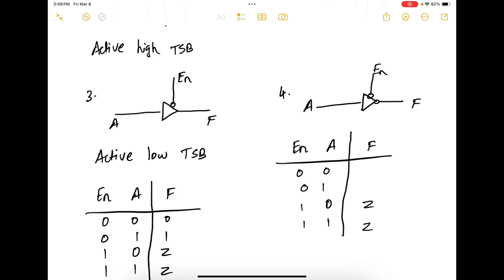So in this case, since enable is 0 and A is 0, your F is 1. And since enable is 0 and A is 1, your F is 0.